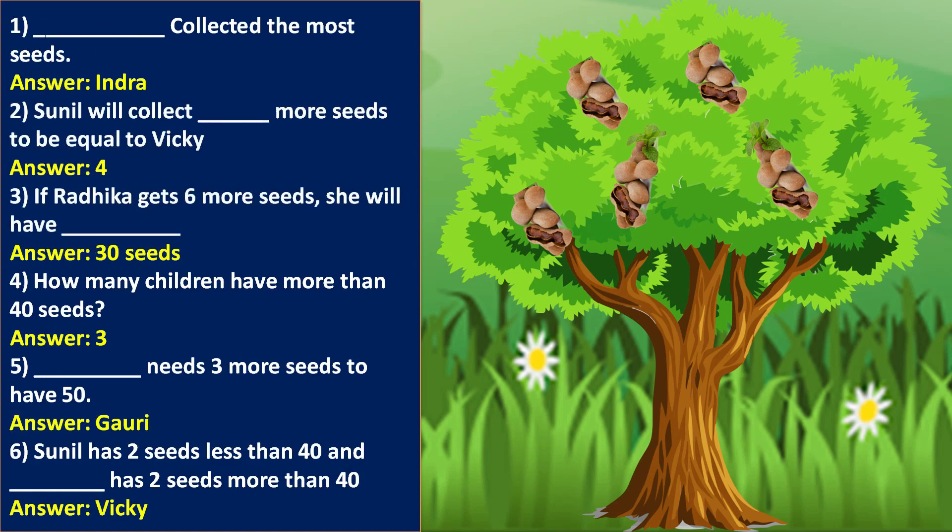Now let us fill the blanks. Indira collected the most seats. Question 2: Sunil will need 4 more seats to be equal to Vicky. Question 3: If Radhika gets 6 more seats, she will have 30 seats.